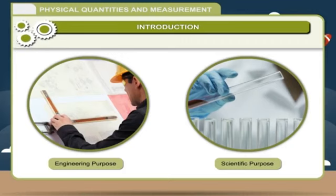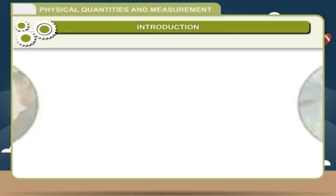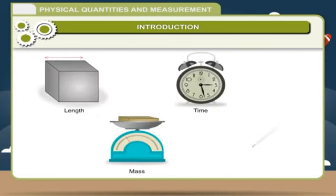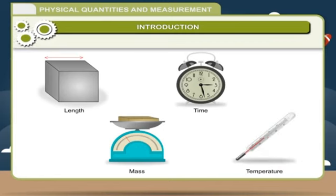In previous classes, we have already learned about physical quantities such as length, mass, time and temperature and their SI units. We have also learned about the direct measurement of these physical quantities. In this chapter, we will learn about some indirect methods of measuring various physical quantities.